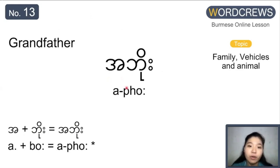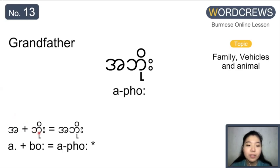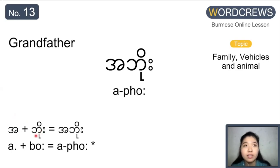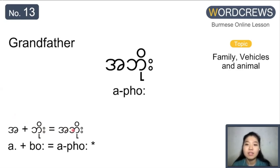The next one is grandfather. Grandfather is a po. This is a special pronunciation. Here is a — maybe you've seen it a lot in a pe and a me. And the next one is spelled with ba alphabet and an o consonant symbol, so according to spelling it should be a bo. But when it comes to the word, we don't pronounce a bo — we pronounce a po. So the spelling is a bo but the pronunciation is a po.